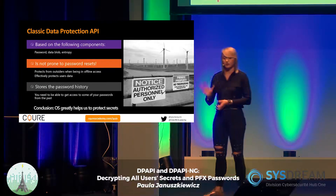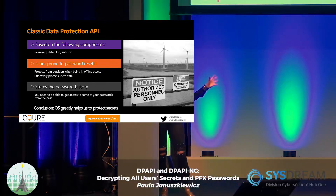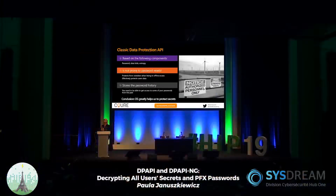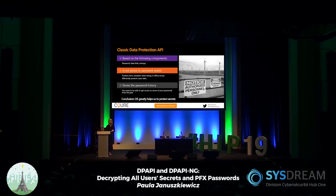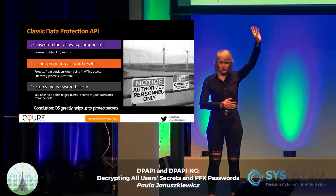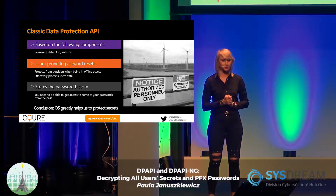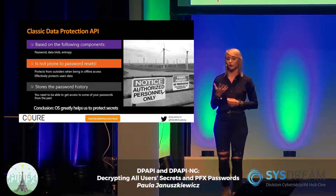DPAPI is delivered in three places: system DPAPI, local user DPAPI, and domain user DPAPI, because for domain users the API works in a slightly different way. The secrets it protects could be an Outlook password or a password stored in a browser. Do you guys recall software from NirSoft? Only about 10% of you — please check it out.